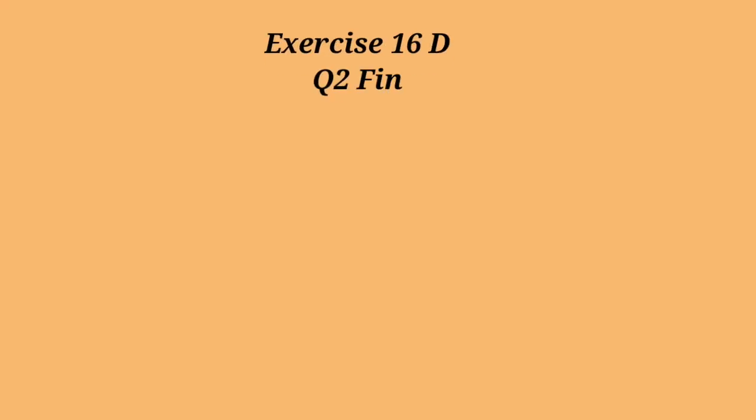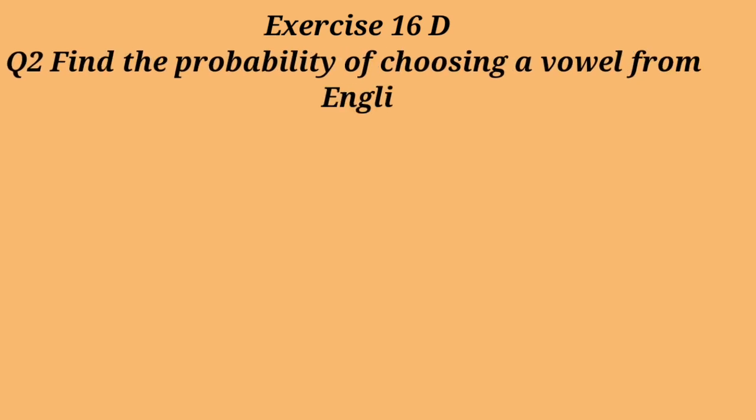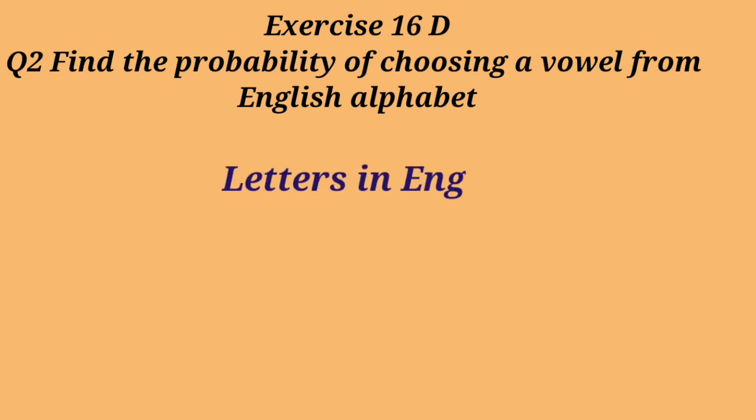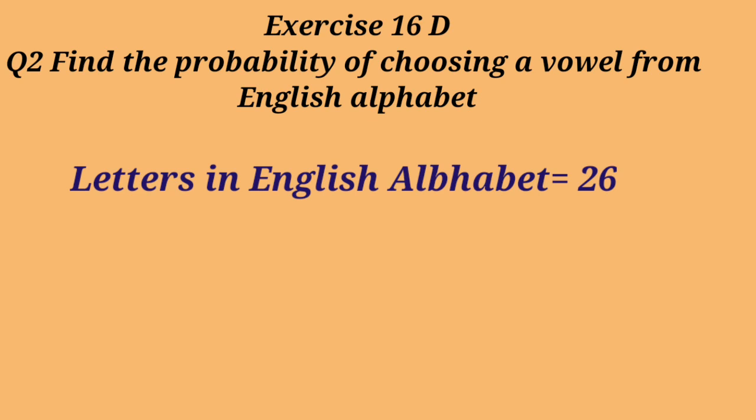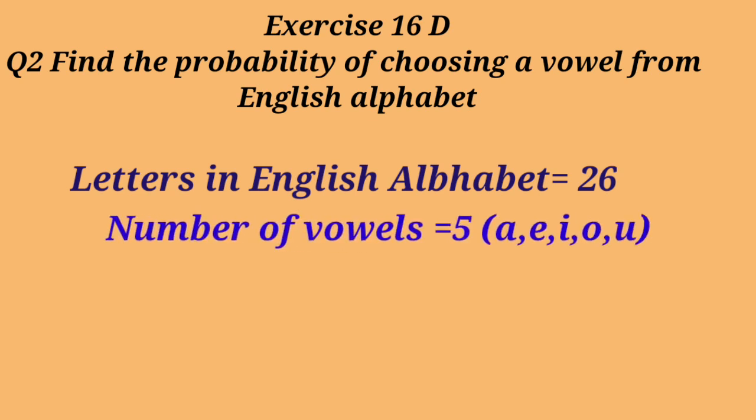Let's begin exercise 16D, question number 2. Find the probability of choosing a vowel from English alphabet. There are 26 letters in English alphabet and number of vowels, they are 5 vowels: A, E, I, O, U.